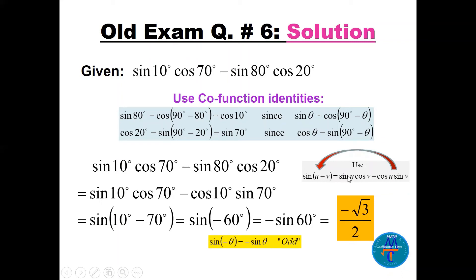Now we recognize the pattern sin(u)cos(v) − cos(u)sin(v) with u = 10° and v = 70°. Applying the sine difference formula backwards gives sin(10° − 70°) = sin(−60°). Since sine is an odd function, this equals −sin(60°) = −√3/2.